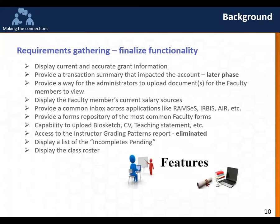The first key requirement was to display current and accurate grant information. One of the big issues over the years was that faculty would look at their grant information through Infoport or other tools and were not confident it was correct. They said don't put this in the portal if the data is not accurate. So there was significant effort within Infoport and PeopleSoft to get that grant information as accurate as possible. It's hard to make perfectly current given projection information and other costs, but we feel we've mostly achieved that goal.